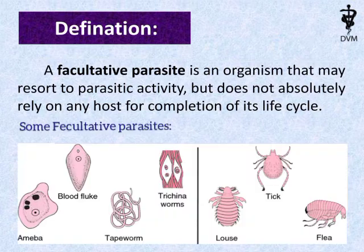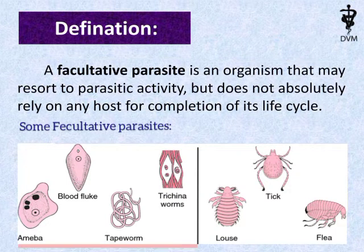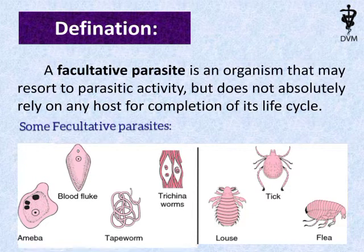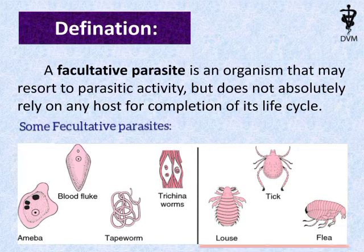Some facultative parasites — like amoeba, blood fluke, some species of tapeworms, trichina worms, louse, ticks, and fleas — are shown in the slide.